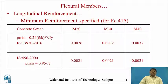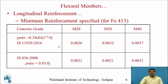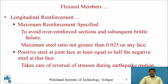Regarding minimum reinforcement, as per IS 456:2000 it is 0.85/fy, while as per IS 13920 it is 0.24√fck/fy. For IS 456, the minimum steel for M20, M30, and M40 is 0.21 percent. As per IS 13920, the minimum steel increases with concrete grade: 0.26 percent for M20, 0.32 percent for M30, and 0.37 percent for M40.